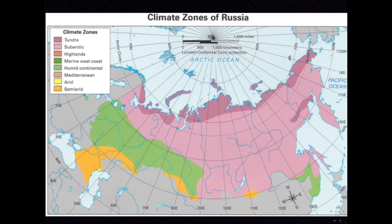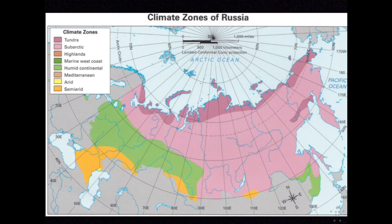Then Roman numeral two: climate and vegetation. Letter A, Russia's climate and vegetation. Most of Russia has a very harsh climate with long, cold winters and short, relatively cool summers. Russia can be characterized by temperature extremes, as some of the coldest temperatures on Earth have been recorded in Russia.